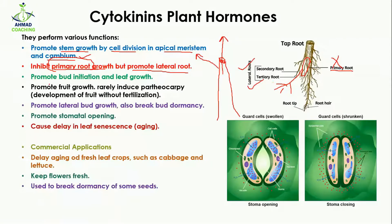Along with this, cytokinin promotes bud initiation and leaf growth. Bud initiation means it promotes the flower bud, and it also increases leaf growth. It also promotes fruit growth.